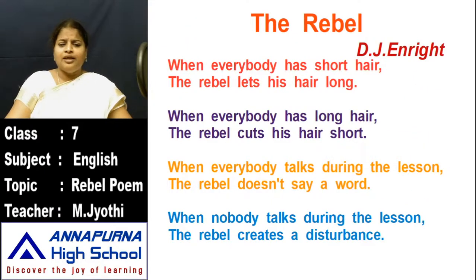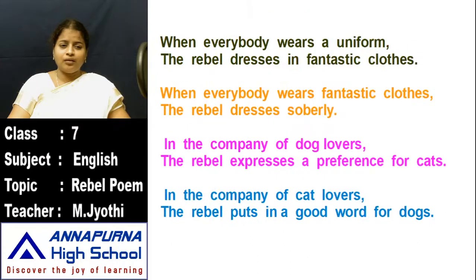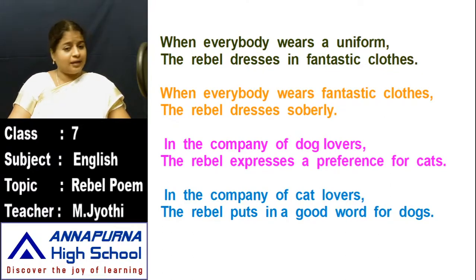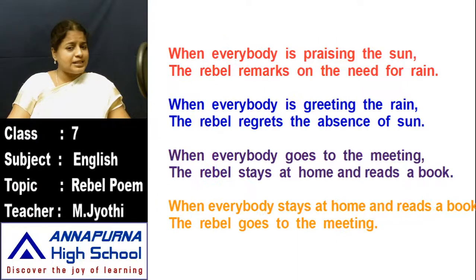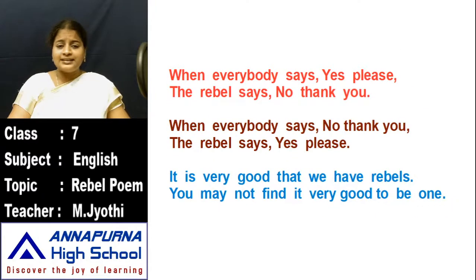Once again I want to read the poem: When everybody has short hair, the rebel lets his hair long. When everybody has long hair, the rebel cuts his hair short. When everybody talks during the lesson, the rebel doesn't say a word. When nobody talks during the lesson, the rebel creates a disturbance. When everybody wears a uniform, the rebel dresses in fantastic clothes. When everybody wears fantastic clothes, the rebel dresses soberly. In the company of dog lovers, the rebel expresses a preference for cats. In the company of cat lovers, the rebel puts in a good word for dogs. When everybody is praising the sun, the rebel remarks on the need for rain. When everybody is greeting the rain, the rebel regrets the absence of sun. When everybody goes to the meeting, the rebel stays at home and reads a book.